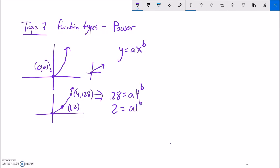And so now notice what I can do is I can do a little bit of division. 128 divided by 2 is equal to a times 4 to the b over a times 1 to the b.